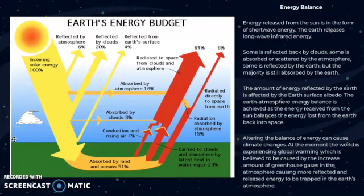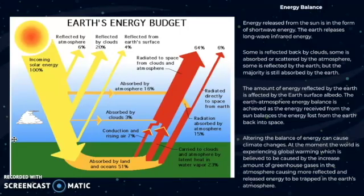Some incoming solar radiation is reflected by clouds, some is absorbed or scattered by the atmosphere, some is reflected by the Earth, but the majority is absorbed by the Earth. The amount of energy reflected by the Earth is affected by the Earth's surface albedo — albedo is basically the ability of a surface to reflect sunlight, and a lighter surface tends to have higher albedo. The Earth-atmosphere energy balance is achieved as the energy received from the Sun balances the energy lost from the Earth back into space. Altering this balance of energy can cause climate changes, and at the moment the world is experiencing global warming, believed to be caused by the increased amount of greenhouse gases in the atmosphere, causing more reflected and released energy to be trapped in the Earth's atmosphere.